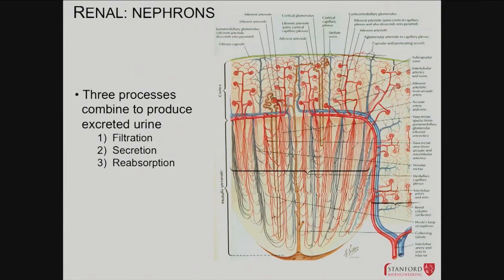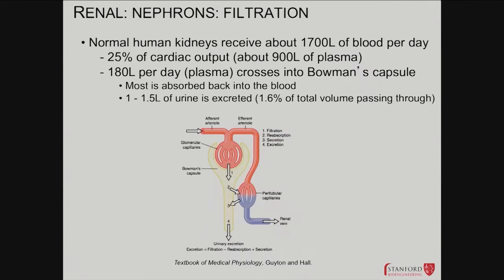There are several processes going on that end up creating urine: there's filtration, there's secretion, and there's reabsorption. We'll talk about each of those in sequence.